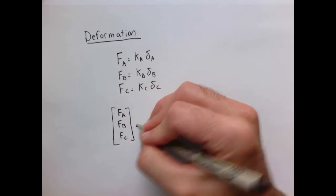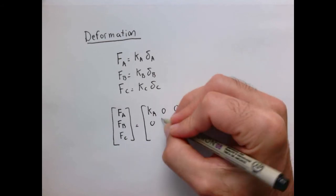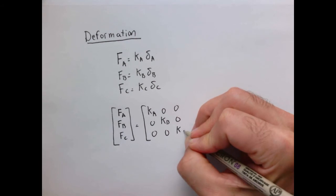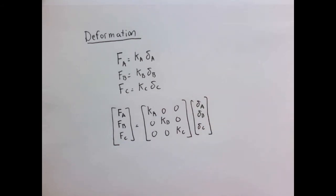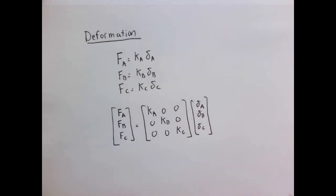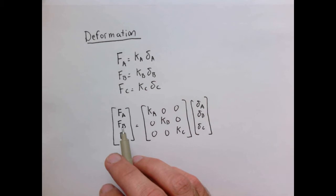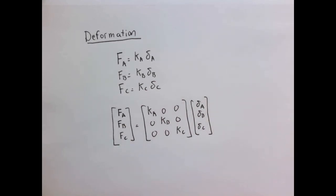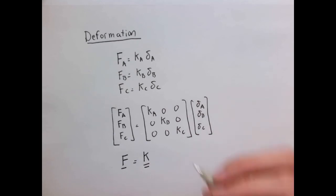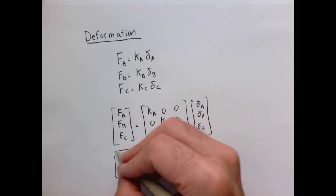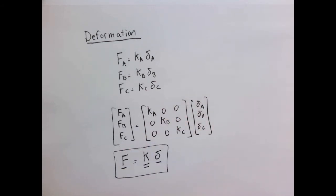From statics we had two equations and three unknowns. By introducing spring laws we've added more equations but also introduced three more unknowns — the displacements δ_A, δ_B, δ_C. So we still haven't solved the problem. The full unknown set is F_A, F_B, F_C and δ_A, δ_B, δ_C. We need compatibility. In vector notation we have F̄ = K·δ̄, giving us two matrix equations — one from statics and one from deformation.